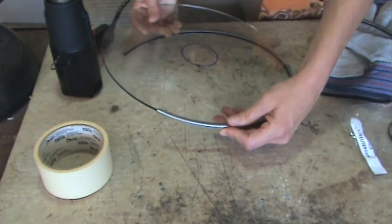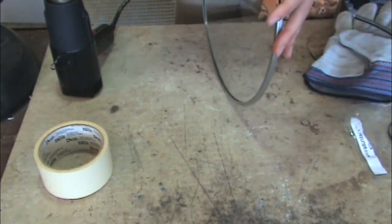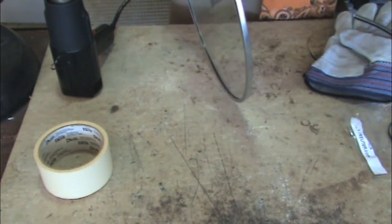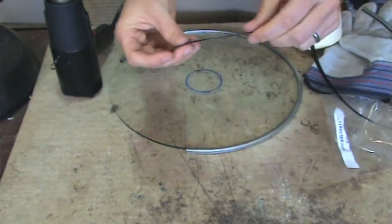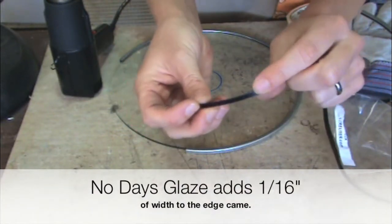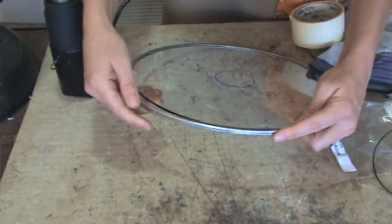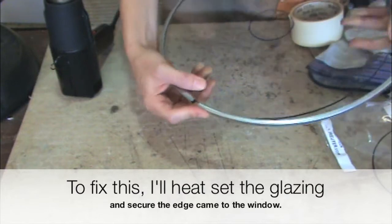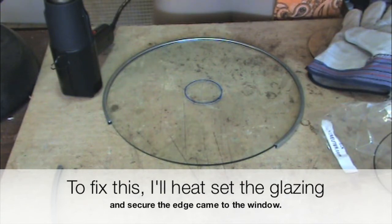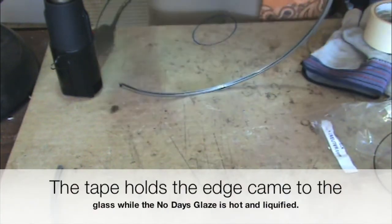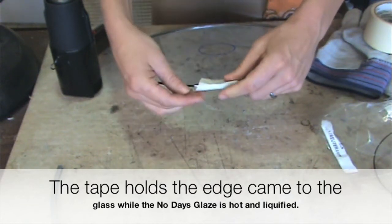And I'm going to start with this big side. It doesn't really matter. I'm piecing together edge came because I had scraps left over and they just happen to fit. You can use one long piece of edge came. That works just as well. So that No Days Glaze, it is adding a little bit of girth to my edge came. So before I had this worked out and it would fit just perfectly. But you can see now, if I have my edge came in there, there's going to be a little gap. Well, that gap is going to disappear as I heat set the No Days Glazing. So I'm going to start by putting a little bit of tape on the spot where I'm going to start, and that's just going to help hold this in place after I heat it.